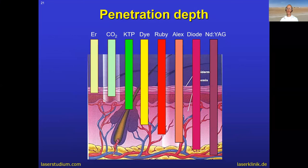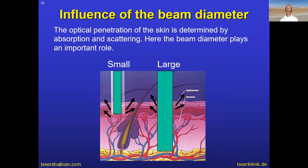Another parameter is penetration depth. Generally, the longer the wavelength, the deeper it penetrates. For example, Nd:YAG penetrates rather deep; diode not as deep; KTP and dye lasers also not very deep. CO2 and erbium are exceptions because they are so strongly absorbed by water that they are absorbed in the epidermis or upper dermis and cannot penetrate deeper. The beam diameter is also important: small diameters do not penetrate as deep, and large diameters penetrate deeper. If you increase energy with a small diameter, it will not go much deeper but surface burns will increase. If you want to reach deeper structures, you should use the largest available beam diameter.